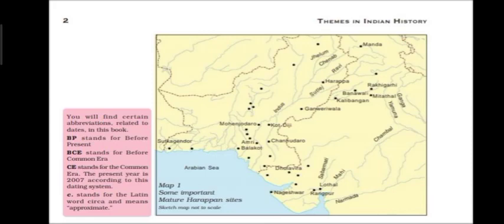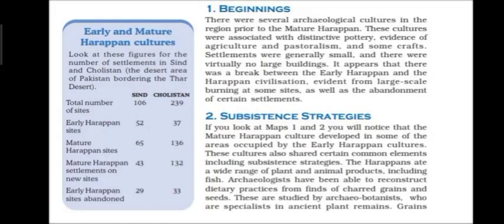Looking at the map, we can see mature Harappan sites in Pakistan — Mohenjodaro, Chanhudaro, Kot Diji, and Harappa — as well as Sutkagen-dor and Lothal. Before the mature Harappan period, several archaeological cultures existed in the region. These earlier cultures were associated with distinct pottery, evidence of agriculture and pastoralism, and some craft work. Settlements were generally small with virtually no large buildings.